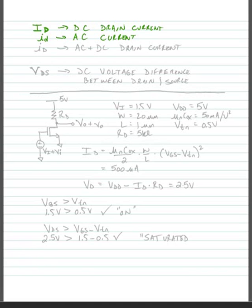Finally, if we are talking about a signal that contains both AC and DC, we typically write lowercase i, capital D. For voltages, we do very similar things, except that normally we're talking about a difference with voltages. So we would write, for instance, capital V, capital DS — and this would be the DC voltage difference between the drain and the source.